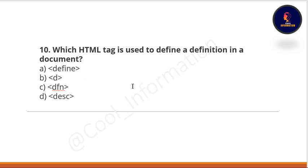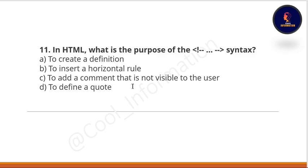Next question: which HTML tag is used to define a definition in a document? Option A: define. Option B: d tag. Option C: dfn tag. Option D: desg tag. The correct option is C — dfn tag.